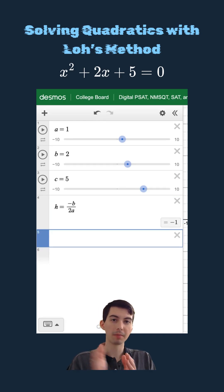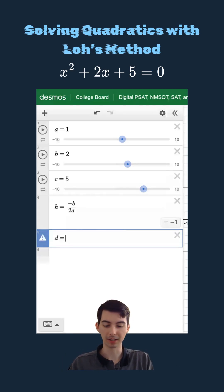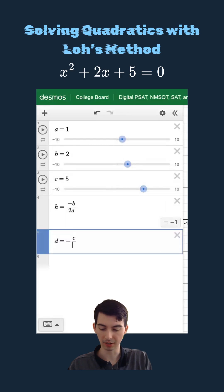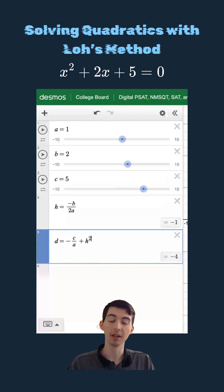But now I know that my solutions are equal distance away from the axis of symmetry. So I'm going to say d, my distance, is negative c divided by a plus my axis of symmetry squared. So my distance is going to be negative 4.